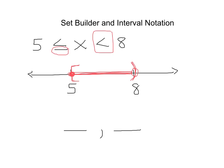We place the endpoints in between brackets and parentheses to describe whether they are included or not. In our problem we include the 5, so reading left to right we have a bracket and a 5 in the first location, then a comma, we end at 8, and it doesn't include the 8 so we have a parenthesis. So we have a closed interval going from 5, including 5, up to 8 but not including 8. That's our interval notation.